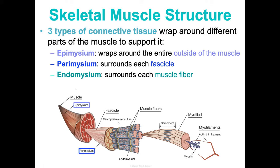We can't talk about muscle contraction without touching on the nervous system, because skeletal muscles only contract voluntarily — they can't contract unless something stimulates them. Contractions only happen if activated by the nervous system, which uses somatic motor neurons to connect with skeletal muscles and signal them to contract.